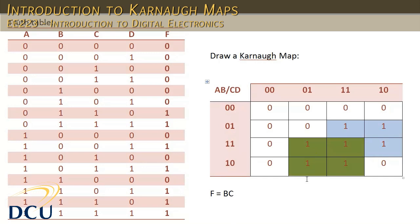We also have the green grouping, and this is a sum of products. Looking at the green grouping: A doesn't change but B does, so B is excluded. Looking along this row, C changes but D doesn't change. So we have the green grouping described as AD. We've included all of our cells, so the minimization of this particular circuit is BC or AD. That's the minimized version.